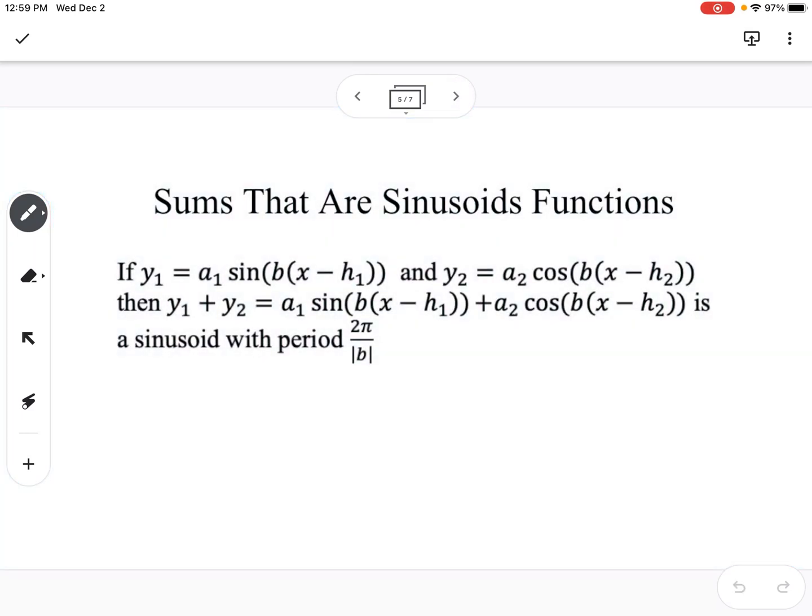So sums that are sinusoid functions. If we have one function, y1, and another function, y2, if we add them together, the sinusoid has a period of 2 pi over b. So you'll notice the b value is going to need to be the same in both of these functions. So when we look at the examples, that b value is going to help us determine the period.